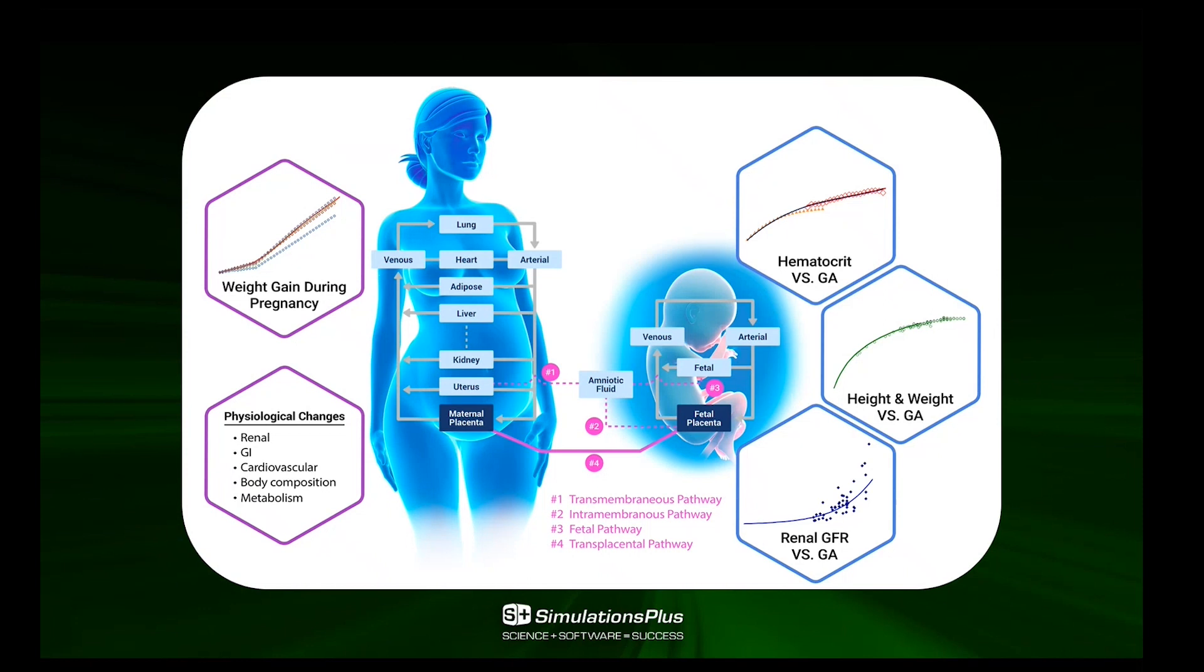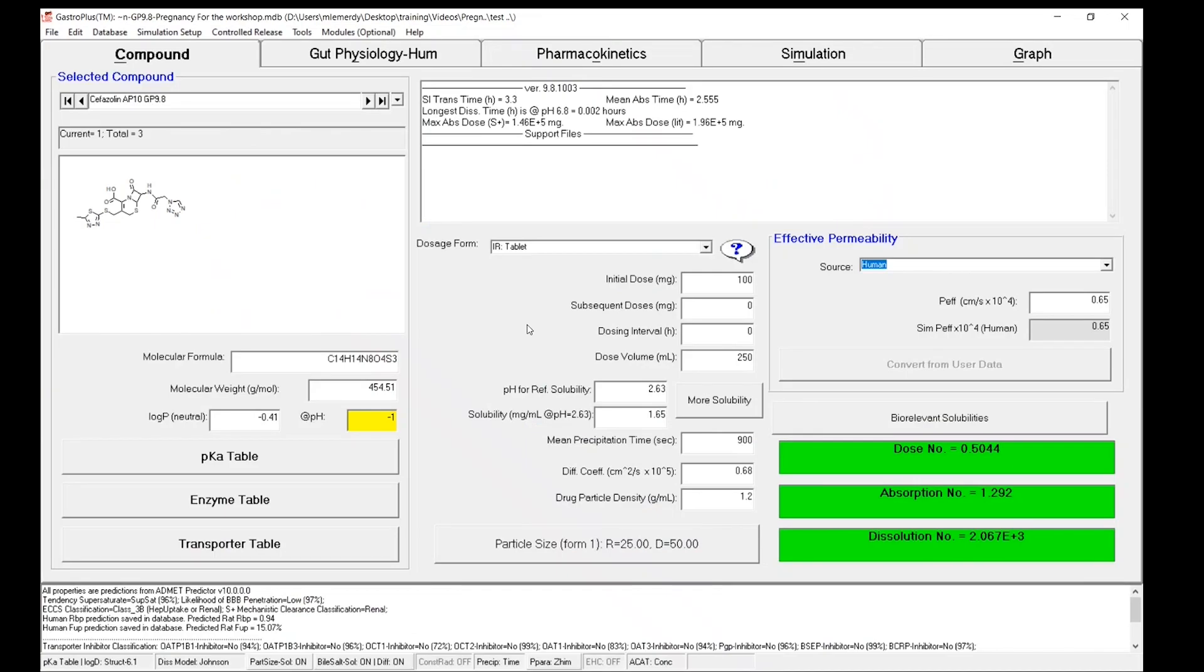So now, I would like to show you in GastroPlus how you can easily set up a PBPK model for pregnant populations. Here on your screen, you can see GastroPlus. I've already opened the database for the drug we will talk about today, which is Cefazolin.